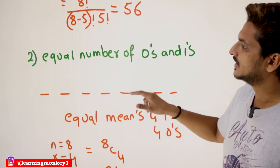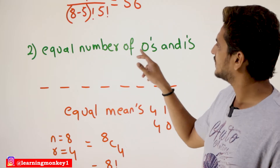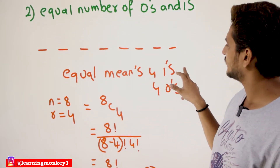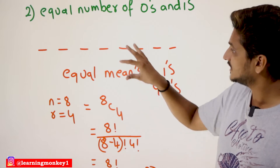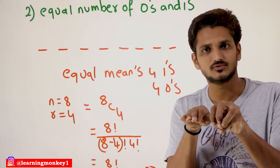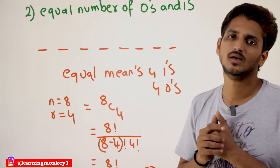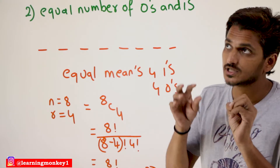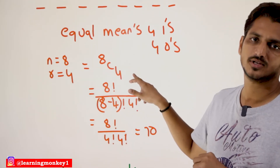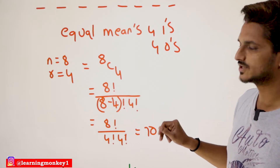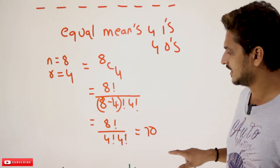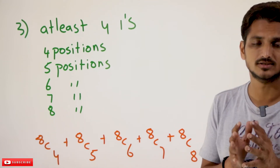Coming to the second example: the same 8-bit strings with equal number of zeros and ones. Equal numbers means four ones and four zeros. In these 8 positions you select any 4 positions and place ones; the remaining 4 positions get zeros. So n = 8, r = 4, and 8C4 = 8! / (4! × 4!) = 70 different possibilities.